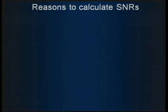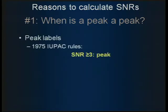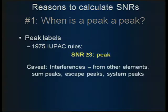Now I get into the reasons why you would calculate signal-to-noise ratios when doing XRF analysis of glass. The question that comes up: when is a peak a peak? Applying the 1975 rules, you can label a peak any time the signal-to-noise ratio of that peak is at least three. A caveat includes interferences — you assess your spectrum to find out what's going on, and you can get interferences from other elements, escape peaks, or system peaks.